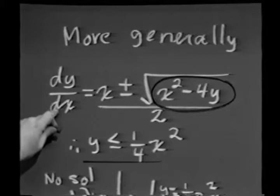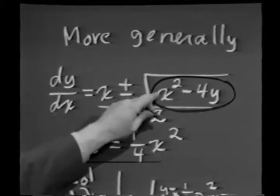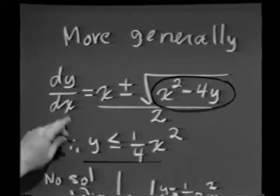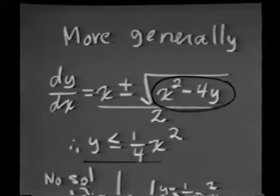So no matter what the solution is, the geometry of this problem tells me there can be no solution if y is greater than 1 fourth x squared.